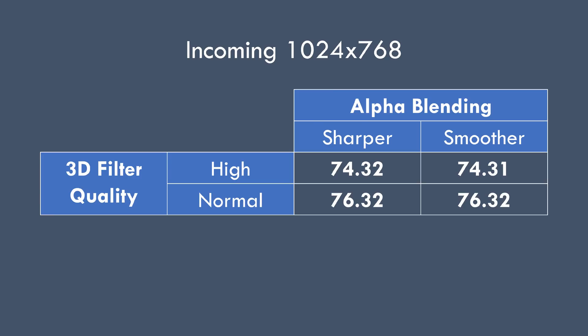What about performance? Running Incoming at 1024x768 with alpha blending toggling between sharper and smoother, I could not measure a difference. With the 3D filter quality set to high we get 74.32 versus 74.31, and with 3D filter quality set to normal, 76.32 versus 76.32. So basically no difference — setting alpha blending between sharper and smoother will not affect performance.